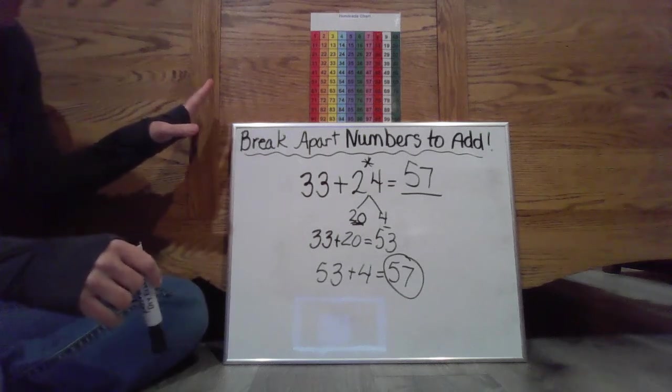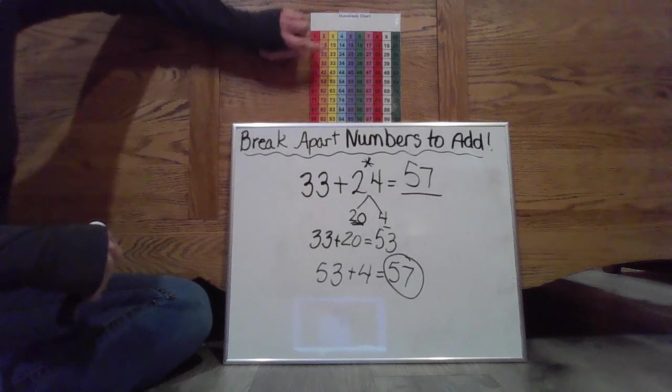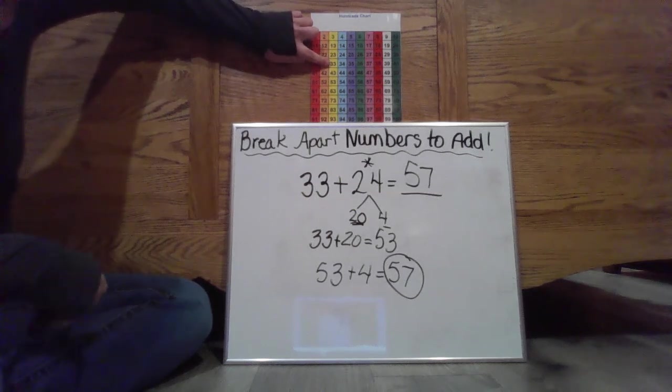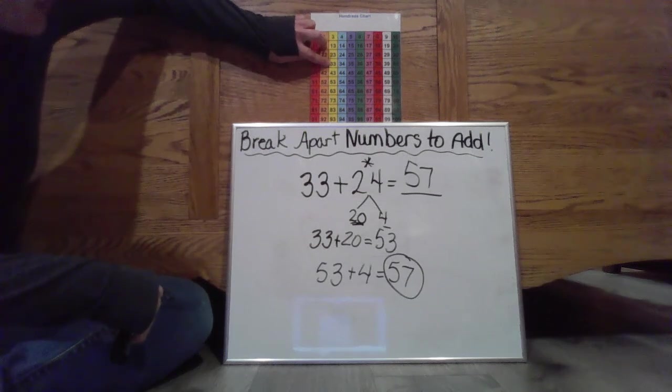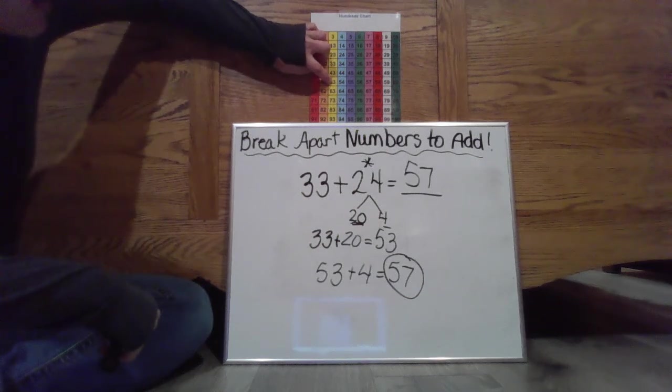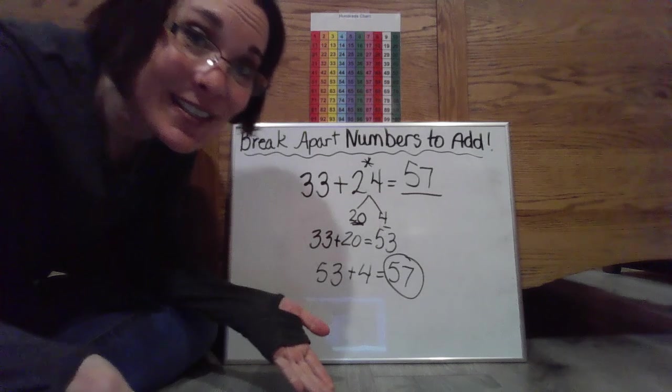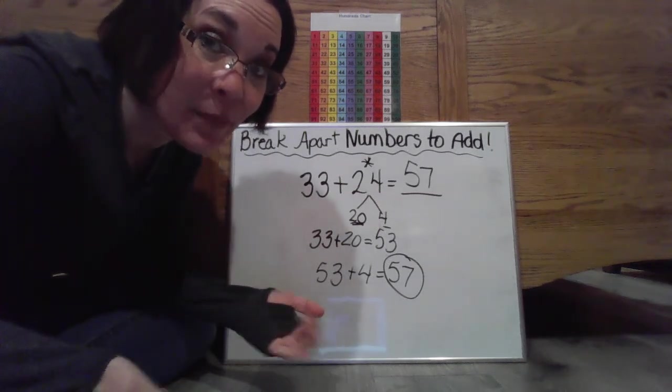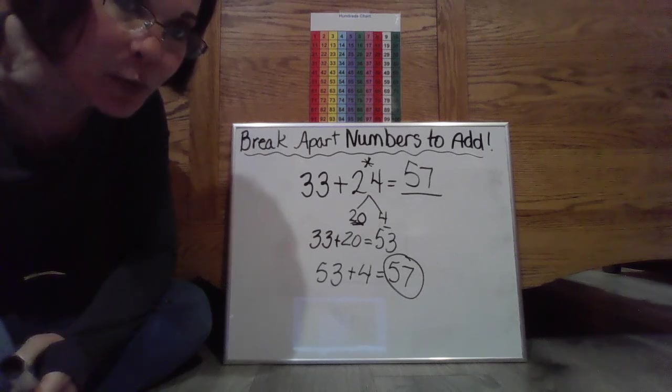So 33 plus 24 is going to be 57. So let's go ahead. Let's use our hundreds chart as our helper. We did this in my last video. So we have 33 plus 24, two tens, four ones. 33, hop down two for the two tens, one, two. Hop over four for the four ones, one, two, three, four. There you go. There's your 57. So it works in multiple ways.